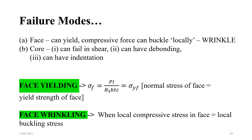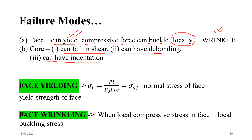Revisiting the failure modes: the face can yield, or compressive force can buckle locally, causing face wrinkling. For face yielding, the expression we have already seen shows that if the normal stress sigma_AF equals the yield strength of the face, face yielding will occur. The normal stress must remain within the design limit of the yield strength of the face material.